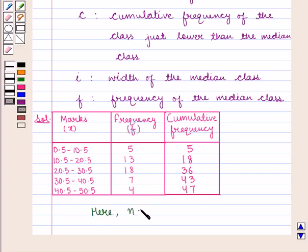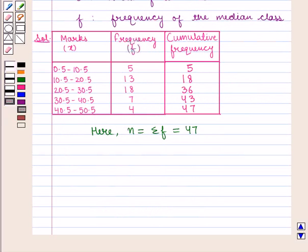Here N is equal to sum of the frequencies that is 47 and median number is given by N by 2 that is 47 by 2 which is equal to 23.5.